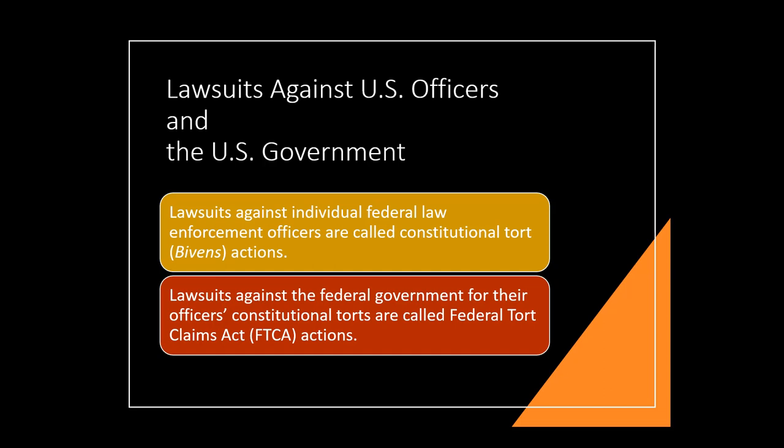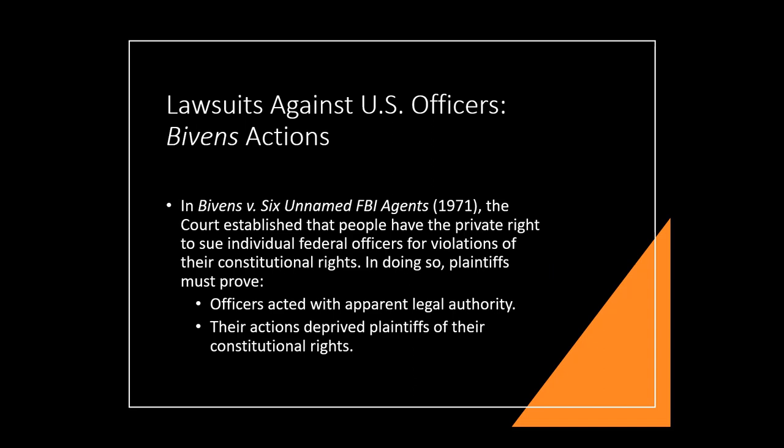The Bivens doctrine came about in Bivens v. Six Unnamed FBI Agents (1971). The case is pretty simple: around Thanksgiving, about half a dozen FBI agents knocked on Bivens' door without an arrest warrant or search warrant, came in, arrested him for narcotics, searched his apartment, handcuffed him in front of his wife and kids, threatened to arrest his whole family, and took him to the courthouse in Brooklyn where he was interrogated, fingerprinted, photographed, and booked.